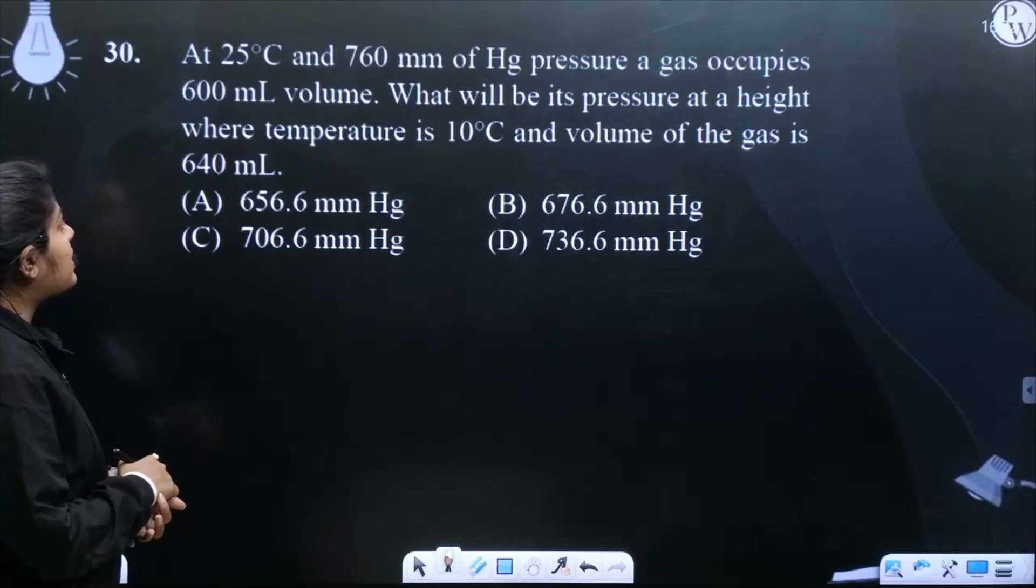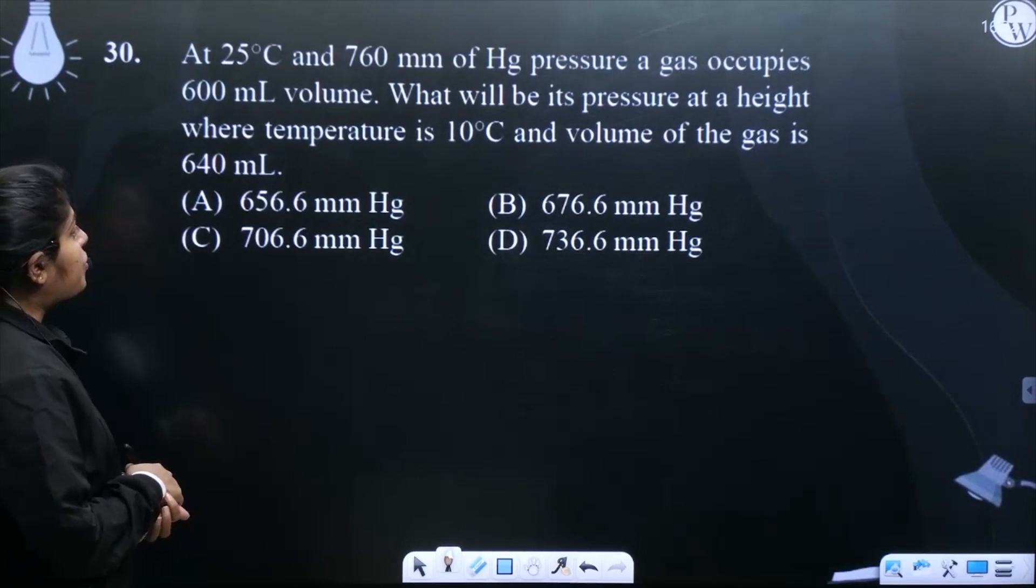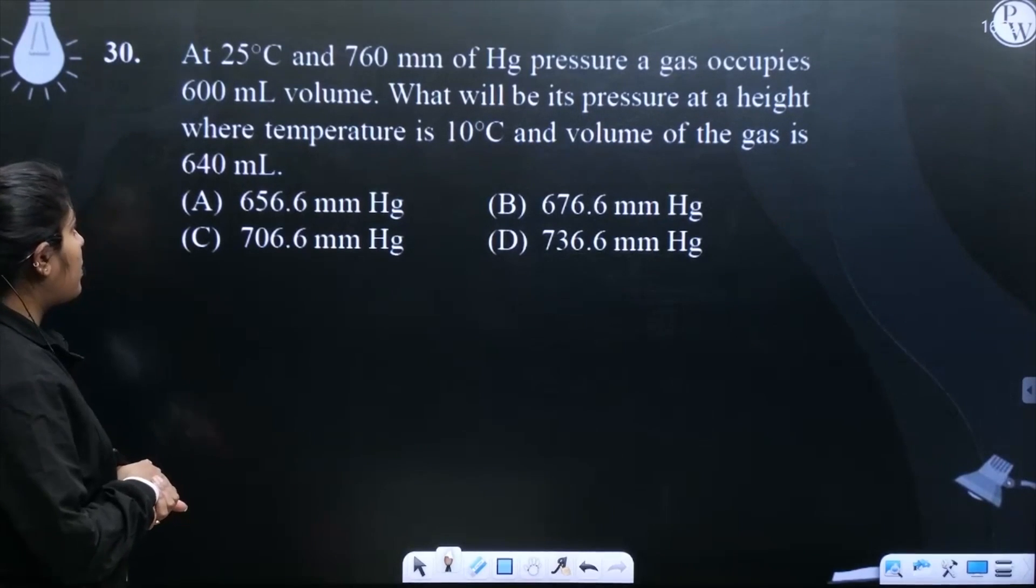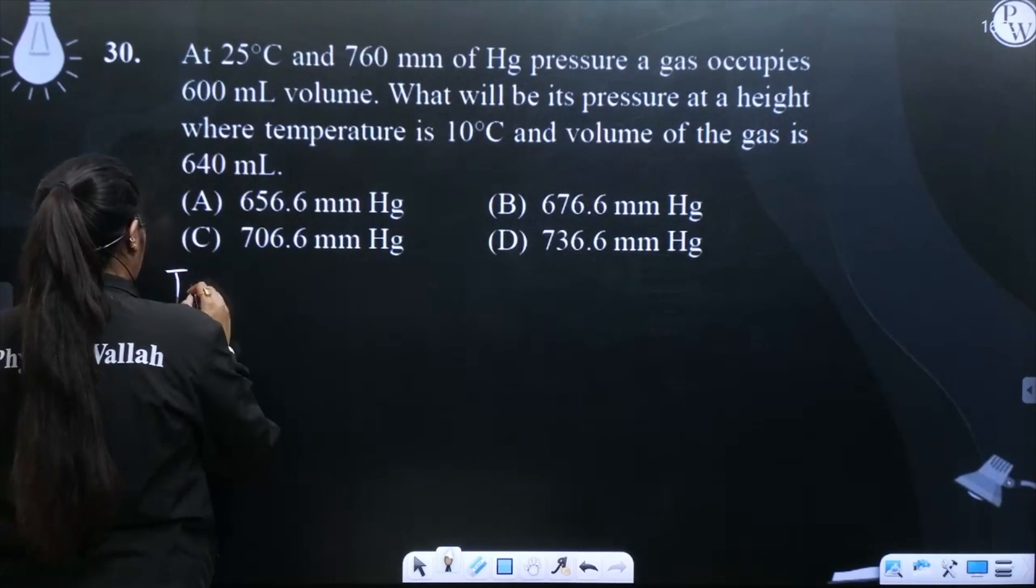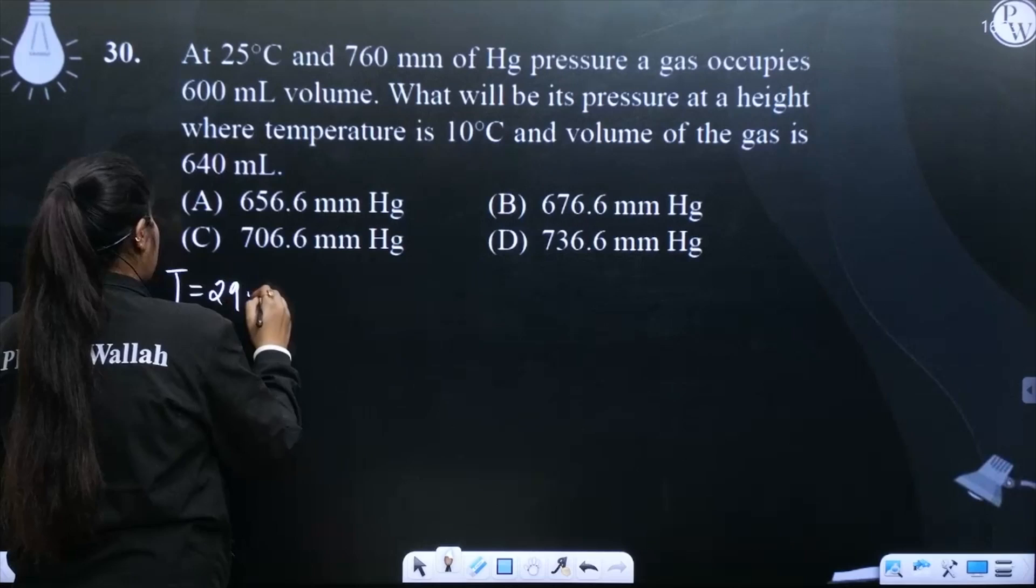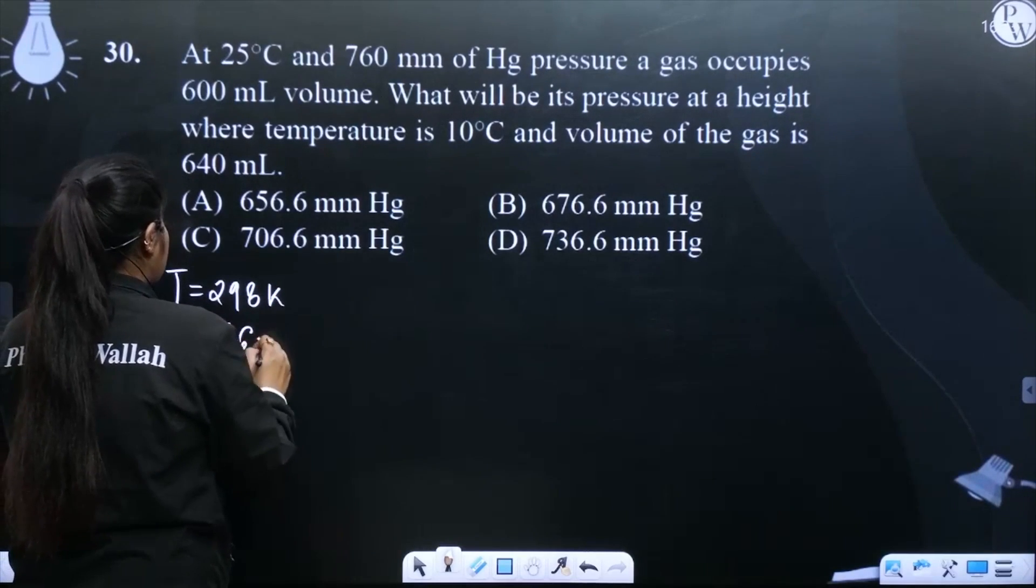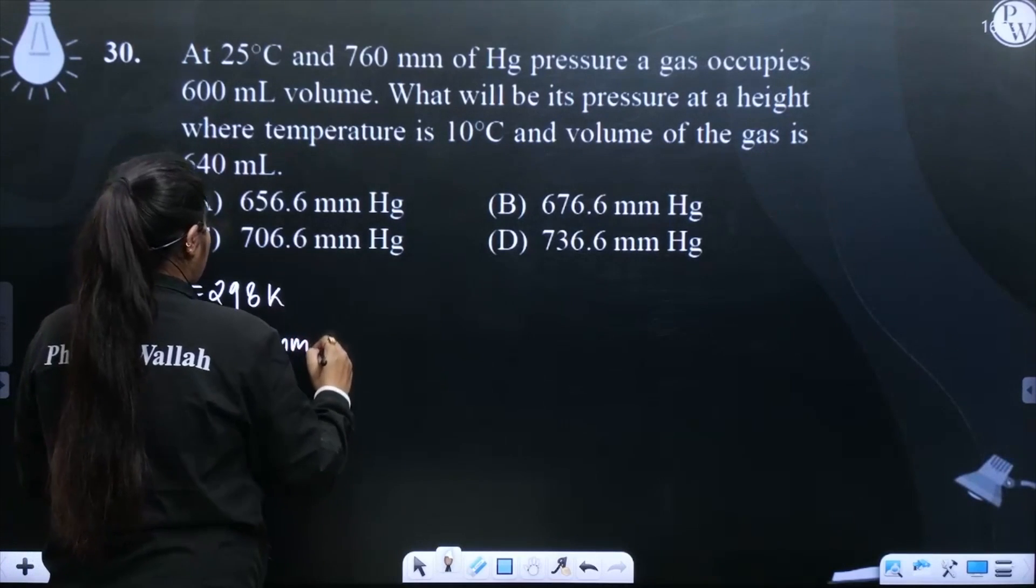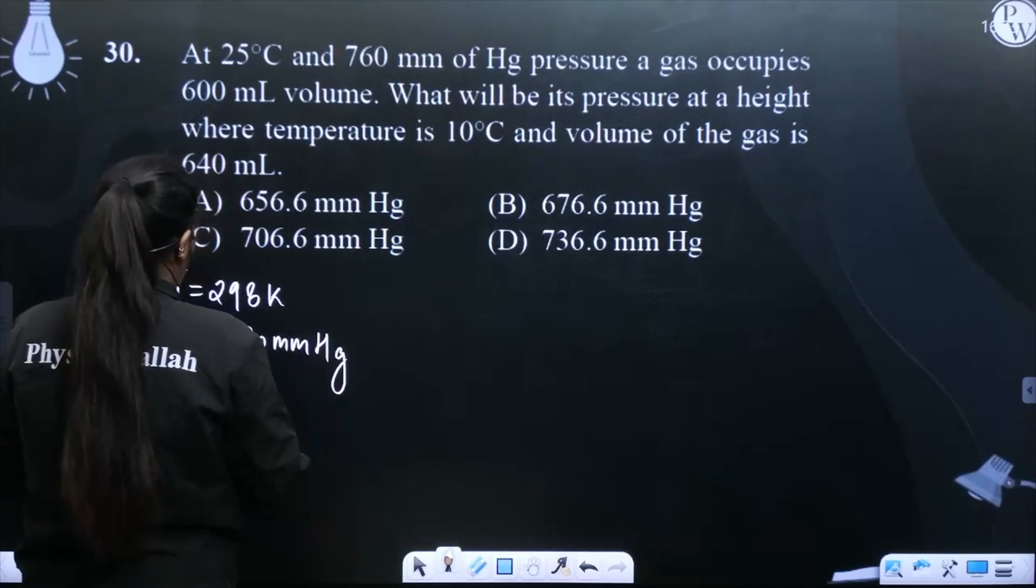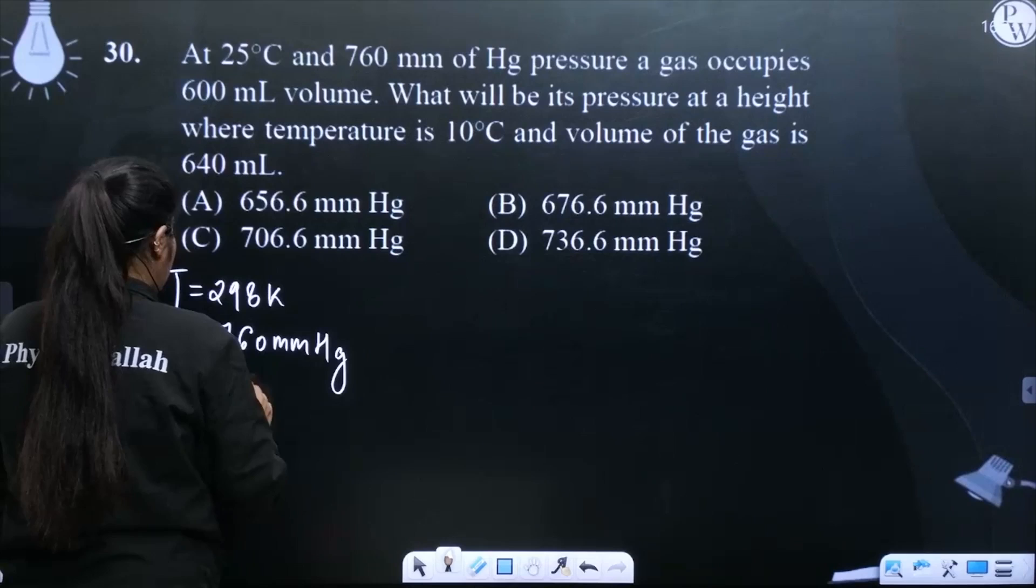At 25 degree Celsius and 760 mmHg pressure, a gas occupies 600 ml volume. Temperature is 25 degree Celsius, that means 298 Kelvin. Pressure is 760 mmHg. And volume is how much? 600 ml.